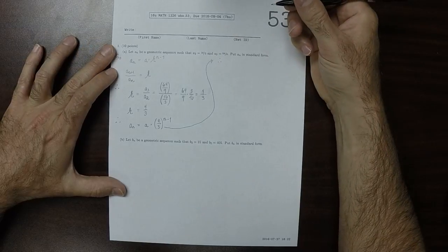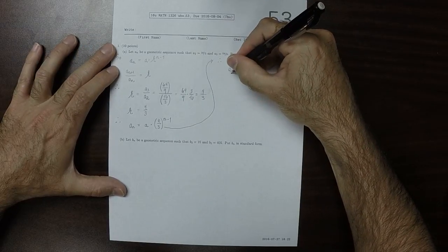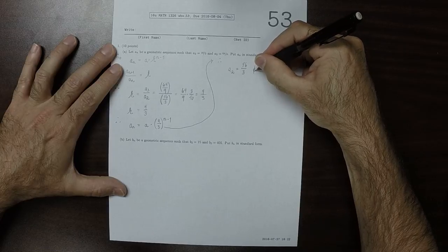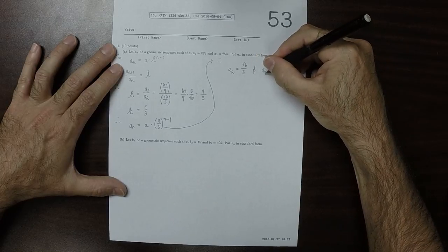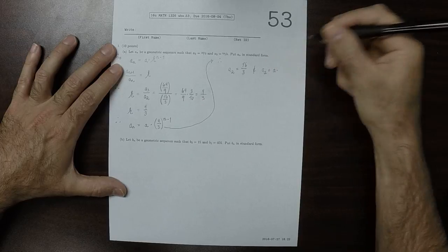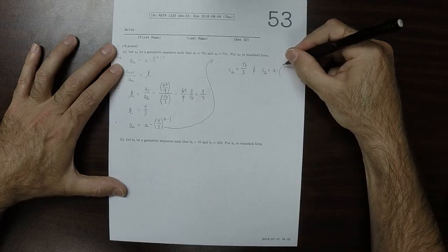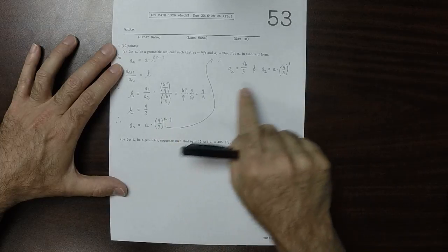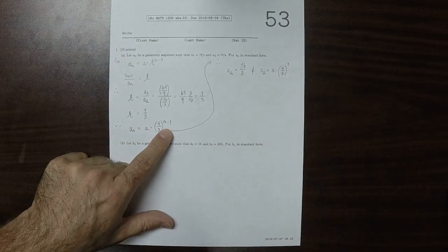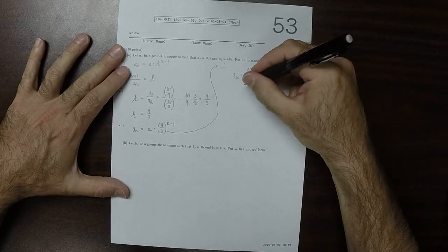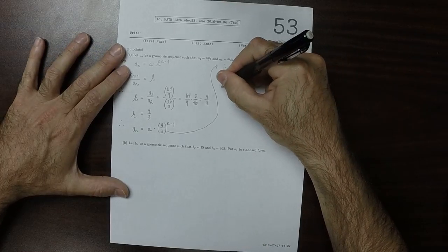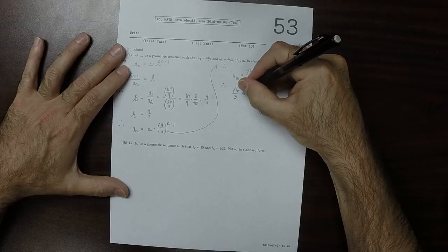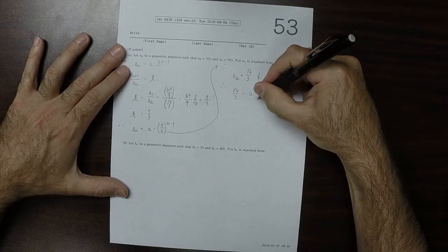Therefore, we know two things. So on the one hand, we were given that a2 is 16 over 3, and on the other hand, we also know that a2, well, that should be the unknown a multiplied by 4 thirds to the 1, because n is 2, and the exponent is n minus 1.